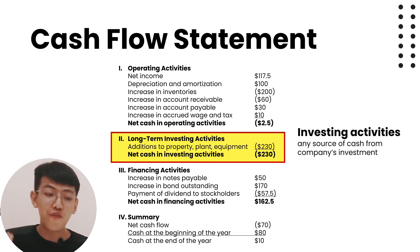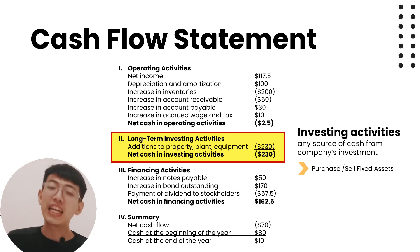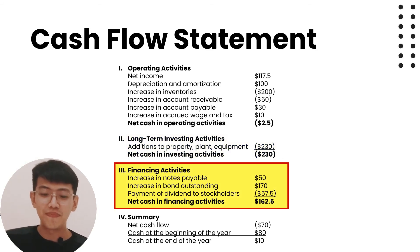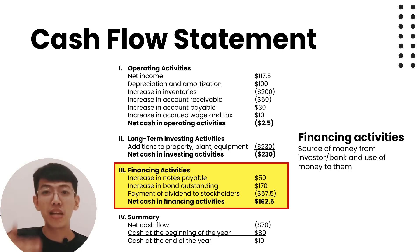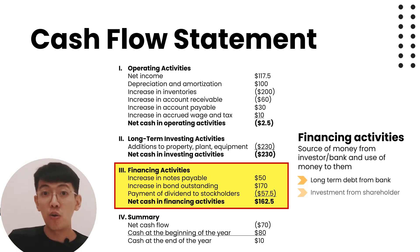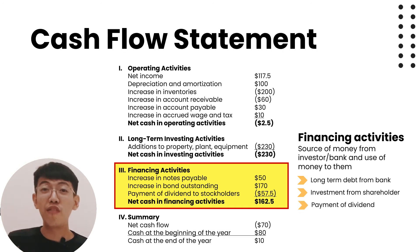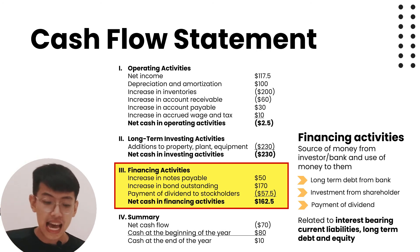The second activity is investing activities — any source and use of cash from the company's investments, such as purchase of fixed assets. Using the indirect method, investing activities relate to fixed assets on the balance sheet. The third activity is financing activities — sources of money from the bank or investors and use of money paid to them, such as long-term debt from a bank, investment from shareholders, and payment of dividends.